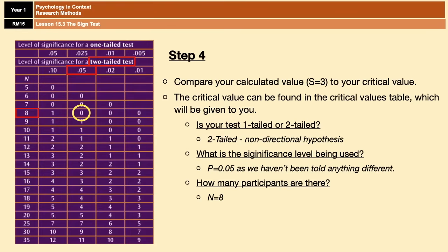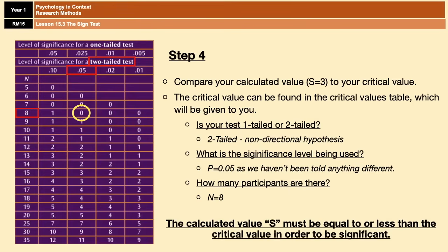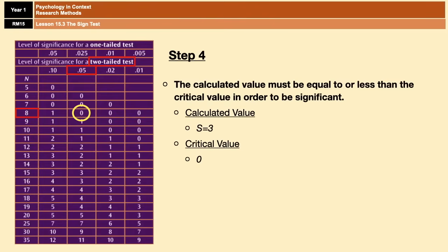The final little bit of information that we are going to be given, and again you will be given this every single time when this comes up in an exam question, is this: The calculated value of S must be equal to or less than the critical value in order to be significant. That's the final little bit of information that you need, and I'll repeat, you will be given this in an exam.